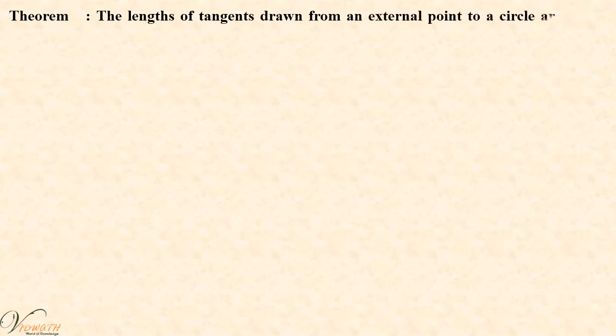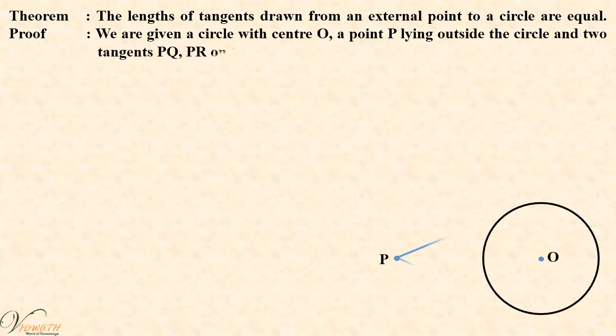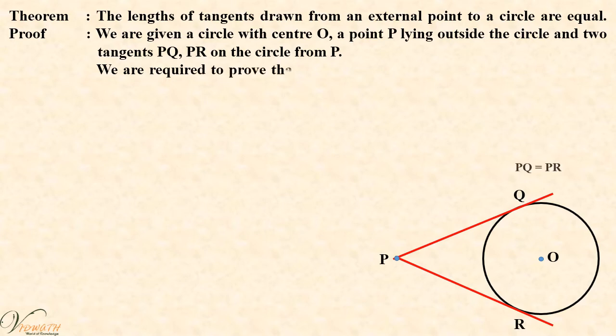Case 3 Theorem: The lengths of tangents drawn from an external point to a circle are equal. Proof: We are given a circle with center O, a point P lying outside the circle and two tangents PQ, PR on the circle from P. We are required to prove that PQ is equal to PR.